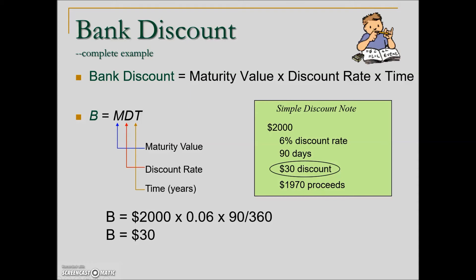I should mention that often when we become familiar with a procedure, we shorten it. Often you will see 'discount' as shorthand for bank discount, and that is where the B comes from. So discount alone is short for bank discount, represented by B.